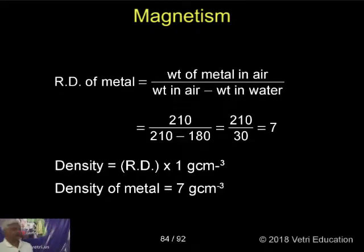You know relative density of the metal equals weight of the metal in air divided by weight in air minus weight in water. That is 210 divided by 210 minus 180, which equals 210 divided by 30, that is equal to 7.